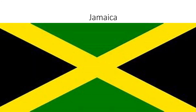Jamaica: there is a yellow X in the middle, and it has two green triangles — one up and one down — and two black triangles, one on the left and one on the right of the flag.